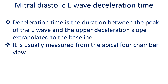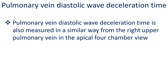It is usually measured from the apical 4-chamber view. Pulmonary vein diastolic wave deceleration time is also measured in a similar way from the right upper pulmonary vein in the apical 4-chamber view.